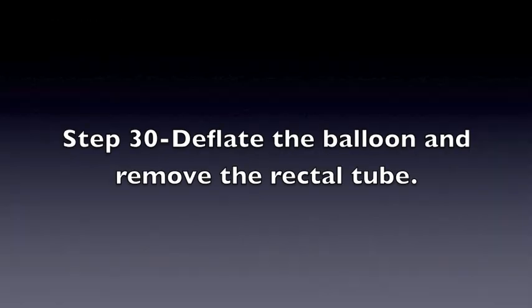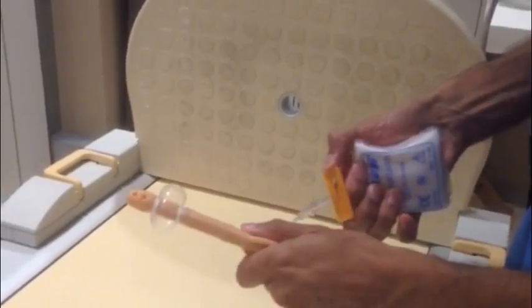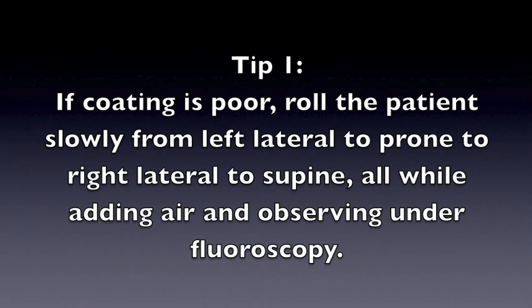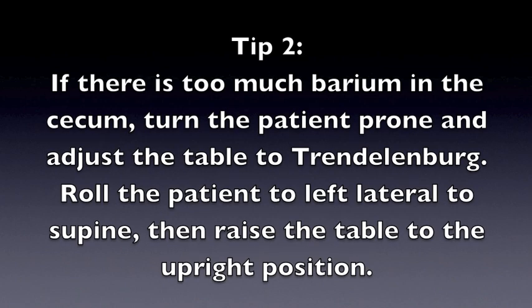Step 30: Deflate the balloon and remove the rectal tube. Tip 1: If coating is poor, roll the patient slowly from left lateral to prone to right lateral to supine, all while adding air and observing under fluoroscopy. Tip 2: If there is too much barium in the cecum, turn the patient prone and adjust the table to Trendelenburg. Roll the patient to left lateral to supine, then raise the table to the upright position.